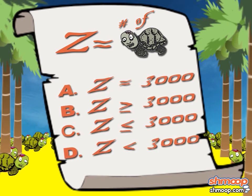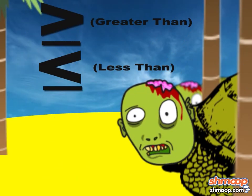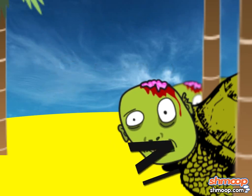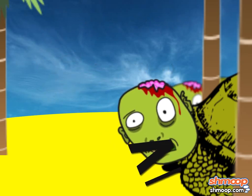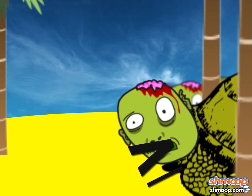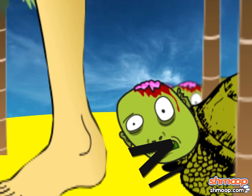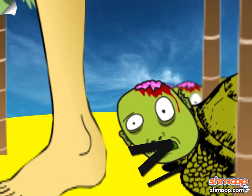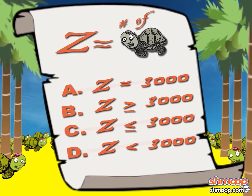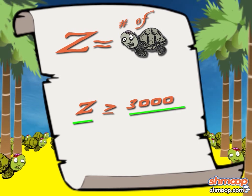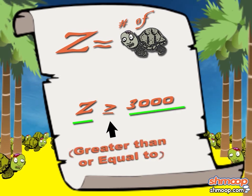Here are your options. The open part of the symbol should face whichever value is greater — just like the gaping maw of the zombie tortoise opens wide, hungry for delicious brains... or an ankle, since they're pretty low to the ground. Anyway, the answer is B. Since Z is greater than or equal to 3,000, you want to put a line under the symbol.